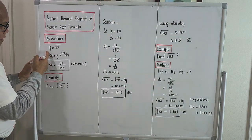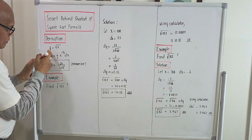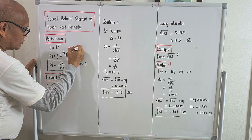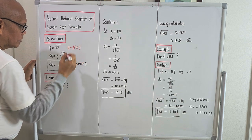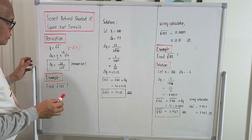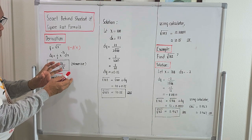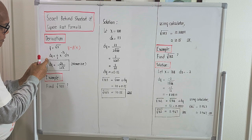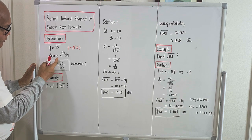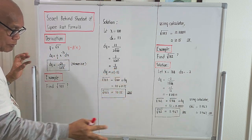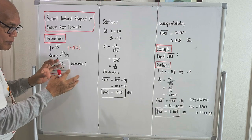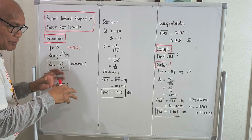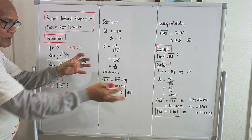We are given the relation y equal to a function of x, or y equal to the square root of x. To bring out this formula, we will be taking the differential of both sides. The differential of y will be dy. The differential of the right-hand side — this is now differential calculus — just to bring out the formula we are using, which others are also using but not telling.